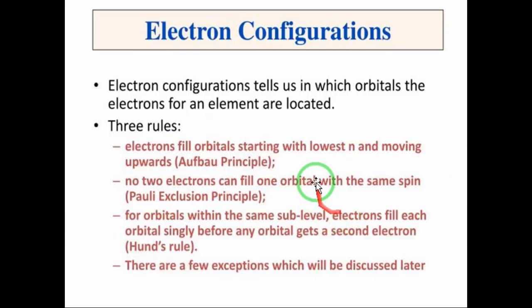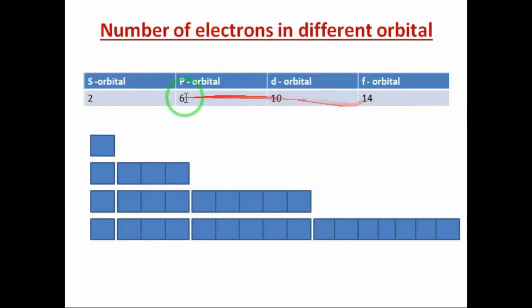Now let's go to the rule. Electrons fill orbitals starting with the lowest energy and moving upward - the Aufbau Principle. You need to fill from the lowest energy level first.